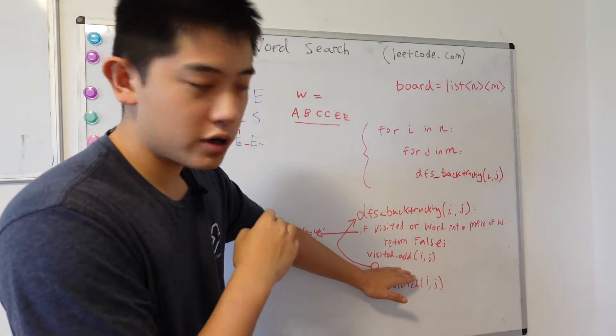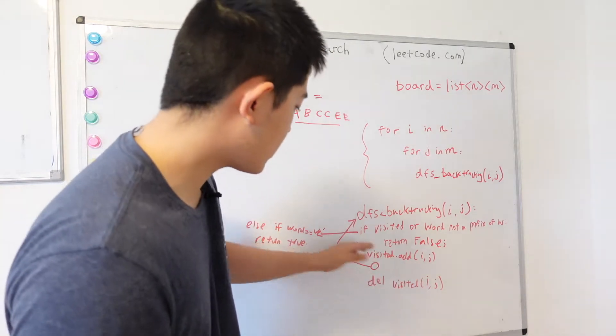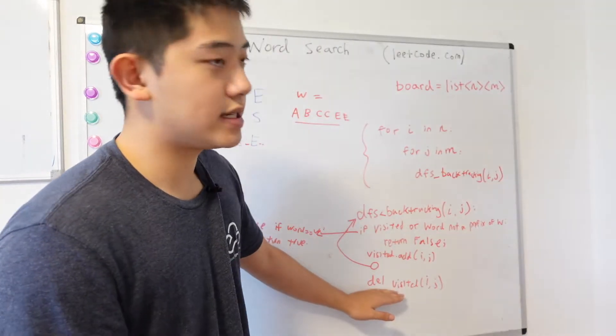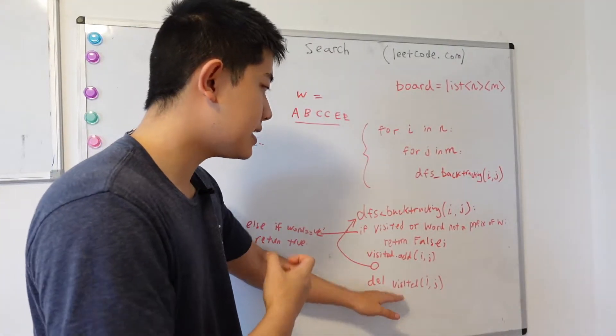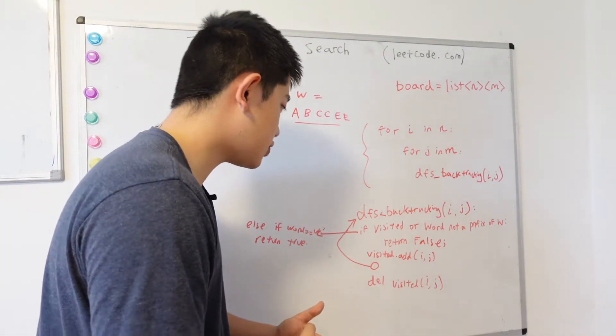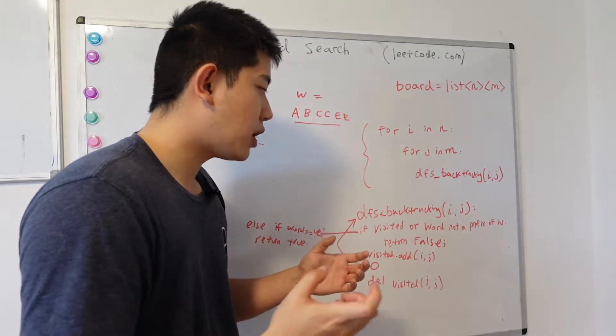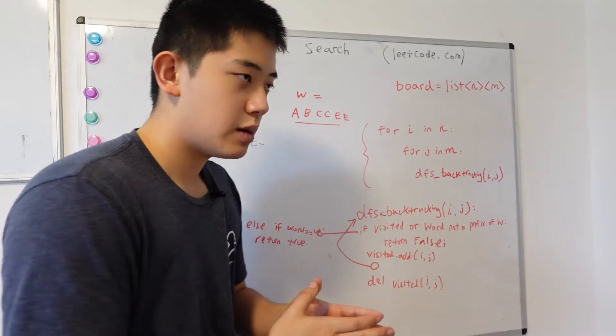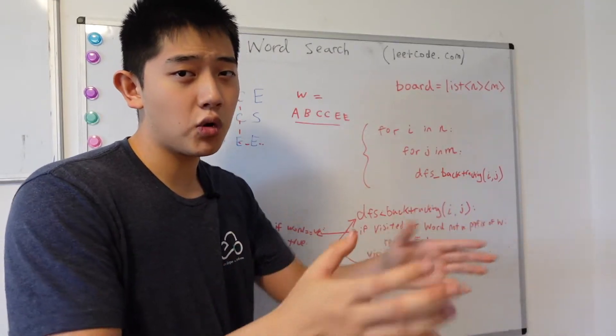And then if you're not satisfied after the recursion, you delete the visited node from your visited set. And that essentially allows you to only modify a single location in memory to avoid having to copy the entire board over.